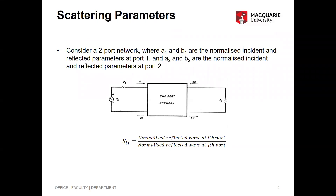The easiest circuit to characterize is a two-port network, which has two ports: port one and port two. We look at the incident and reflected voltage waves. The incident wave at port one is a1, the reflected wave is b1. At port two, the incident wave is a2 and the reflected wave is b2. We want to find the reflected values b1 and b2 in terms of the incident values a1 and a2.